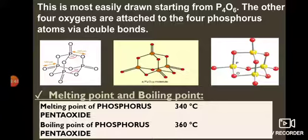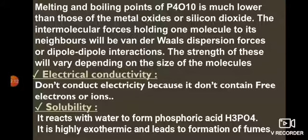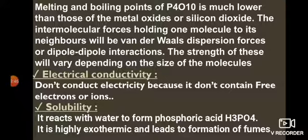Melting and boiling point of phosphorus pentoxide: melting point 340°C, boiling point 360°C — much lower than metal oxides or silicon dioxide because they are molecular solids with weak intermolecular forces (van der Waals dispersion or dipole-dipole). Electrical conductivity: does not conduct electricity as it contains no free electrons or ions — only molecules. Solubility: when phosphorus pentoxide is treated with water it forms phosphoric acid in a highly exothermic reaction that produces fumes.